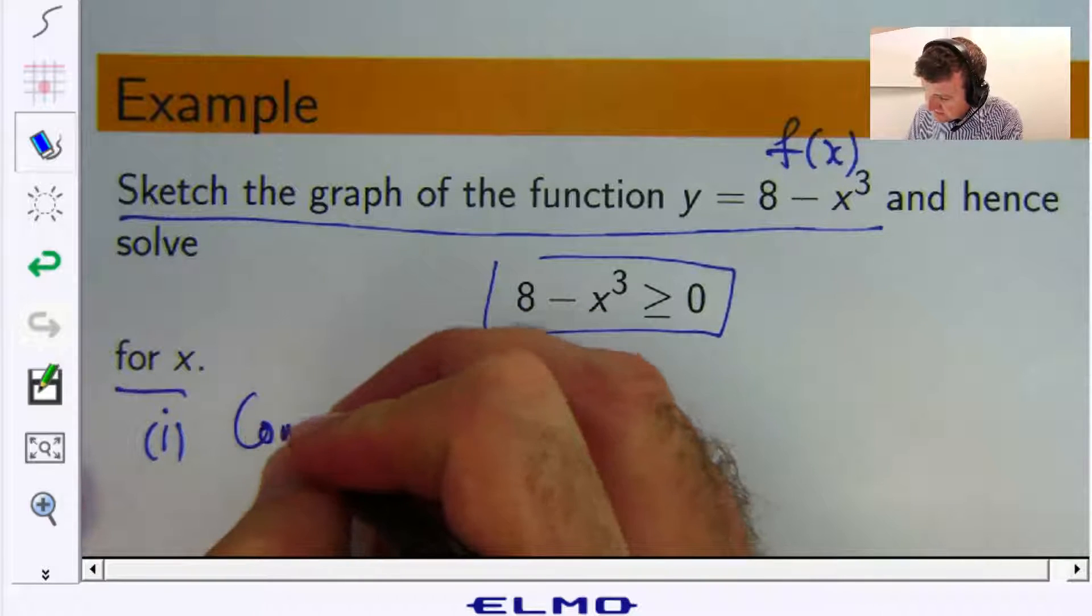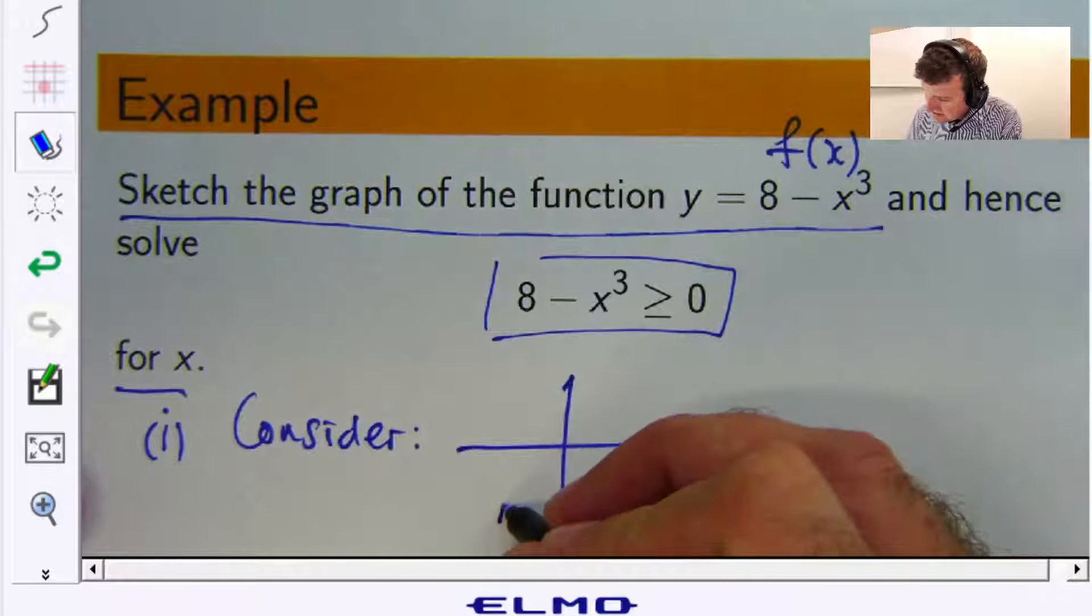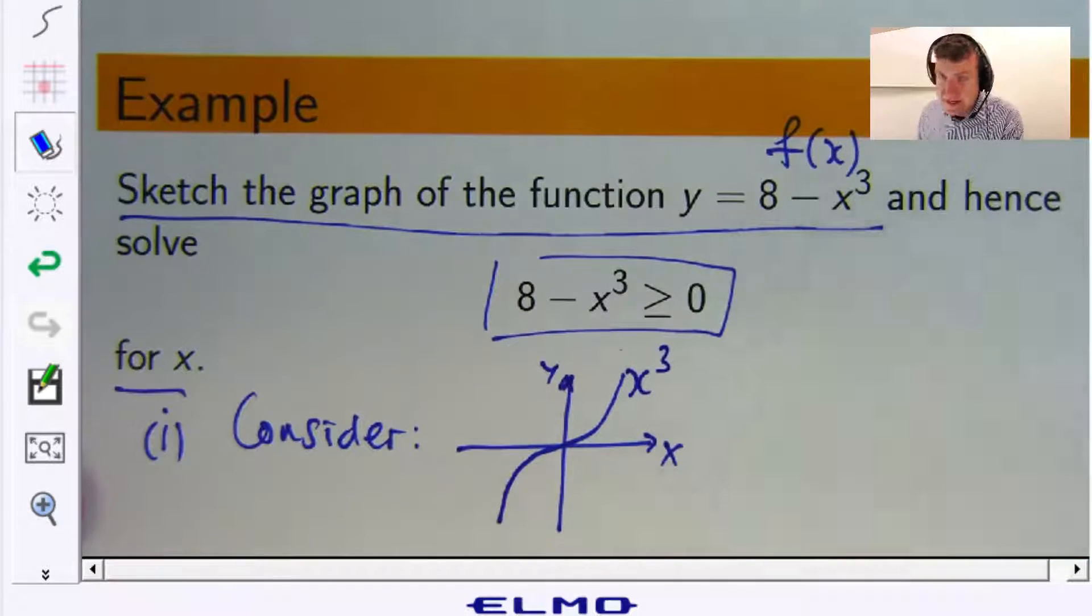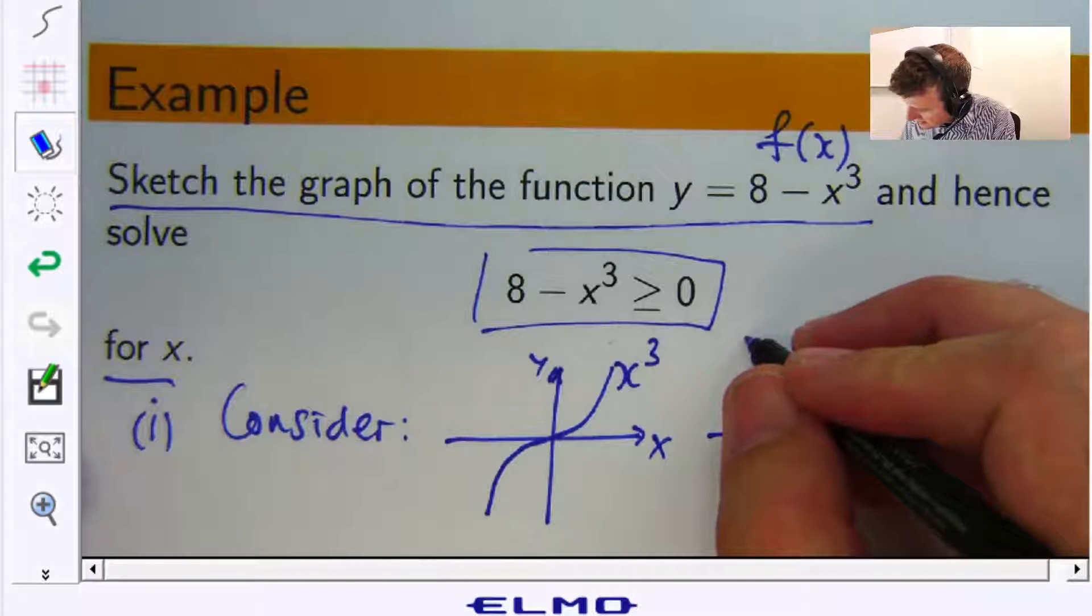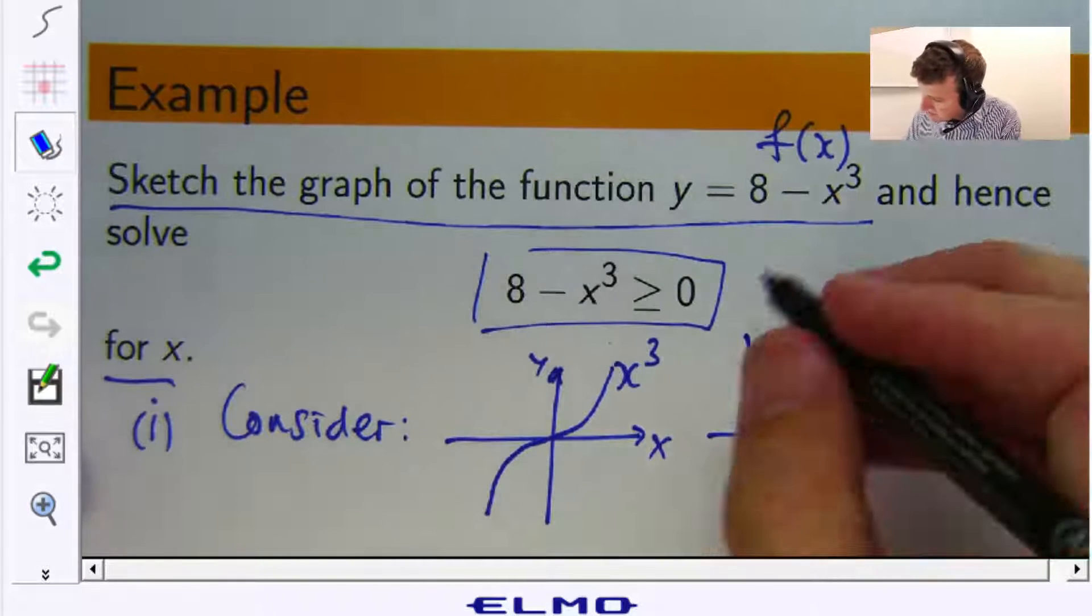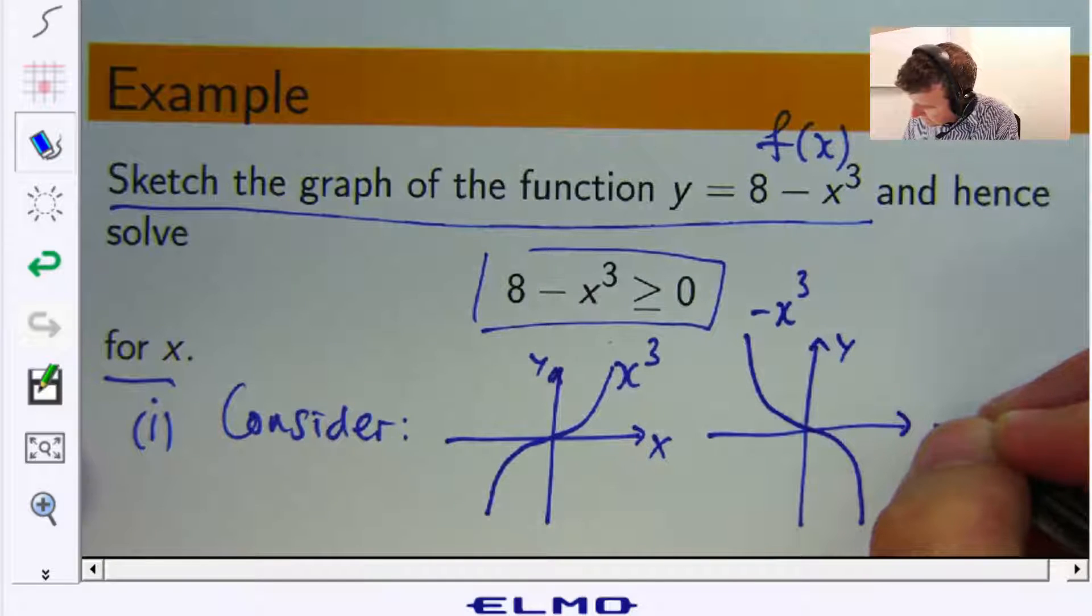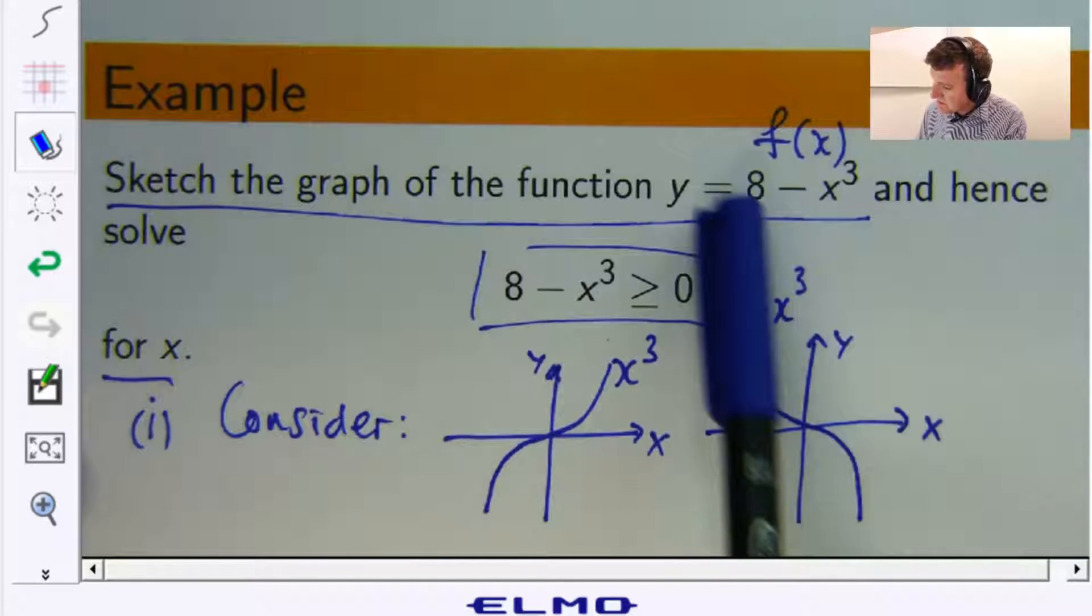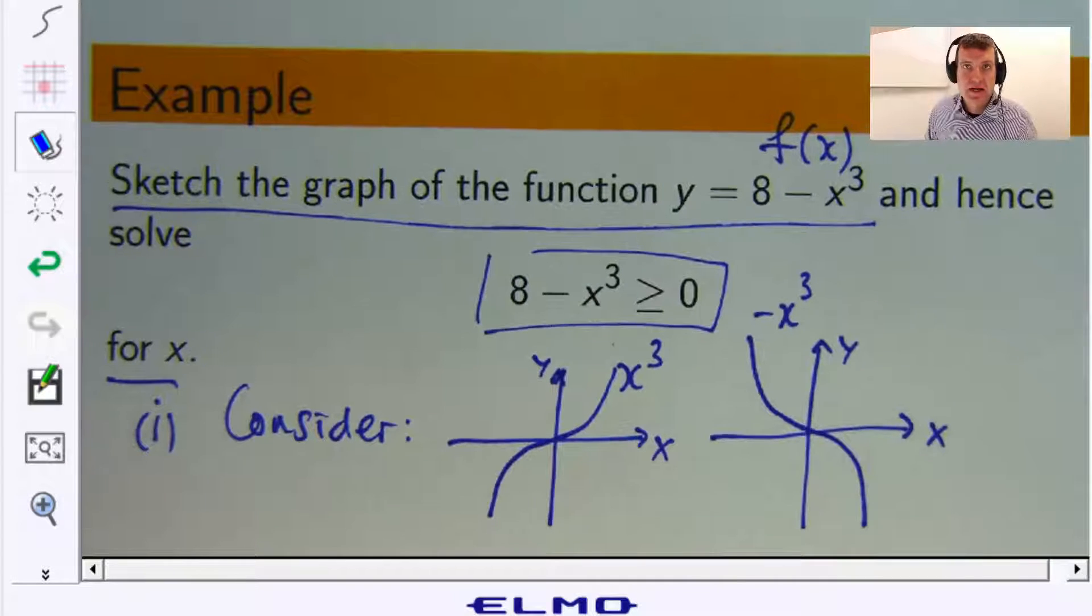So let's just consider the following. This is the graph of x cubed. This is the graph of negative x cubed. And basically the difference between this and this is this has had 8 added to it. So I just need to shift this graph 8 units up the y-axis. And then I've got my graph.